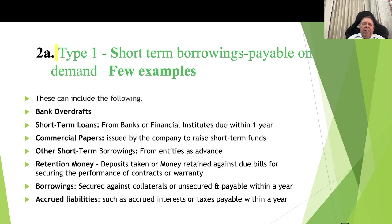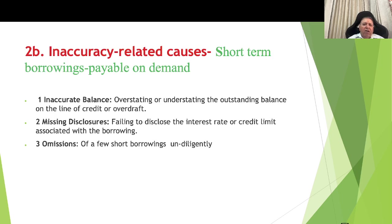Type 1 — short-term borrowings payable on demand. Examples include bank overdrafts, short-term loans from banks or financial institutions due within one year, commercial papers issued to raise short-term funds, other short-term borrowings such as advance retention money or deposits taken securing performance of contracts or warranty, borrowings secured against collaterals or unsecured and payable within one year, and accrued liabilities such as accrued interest or tax payable within one year.